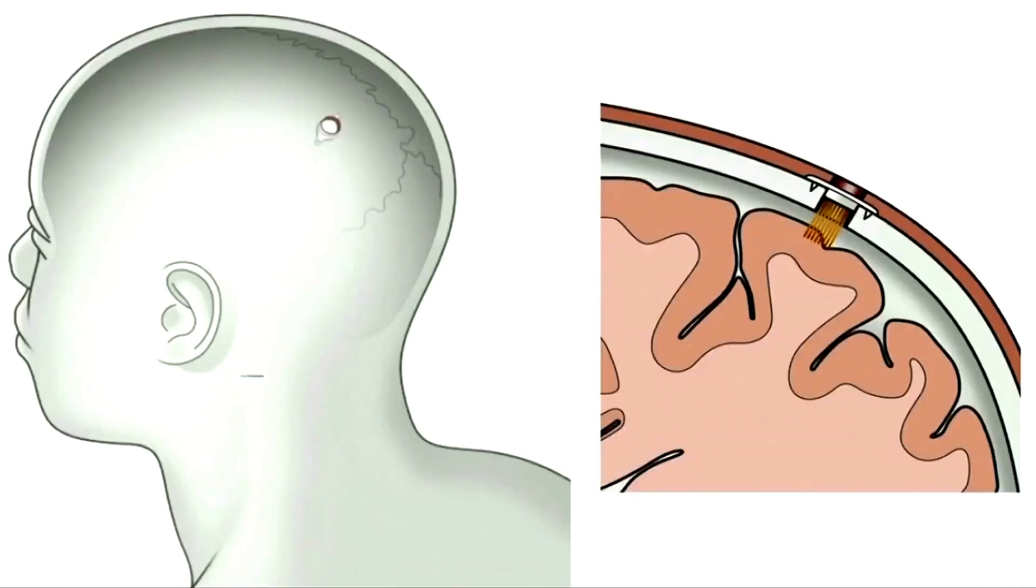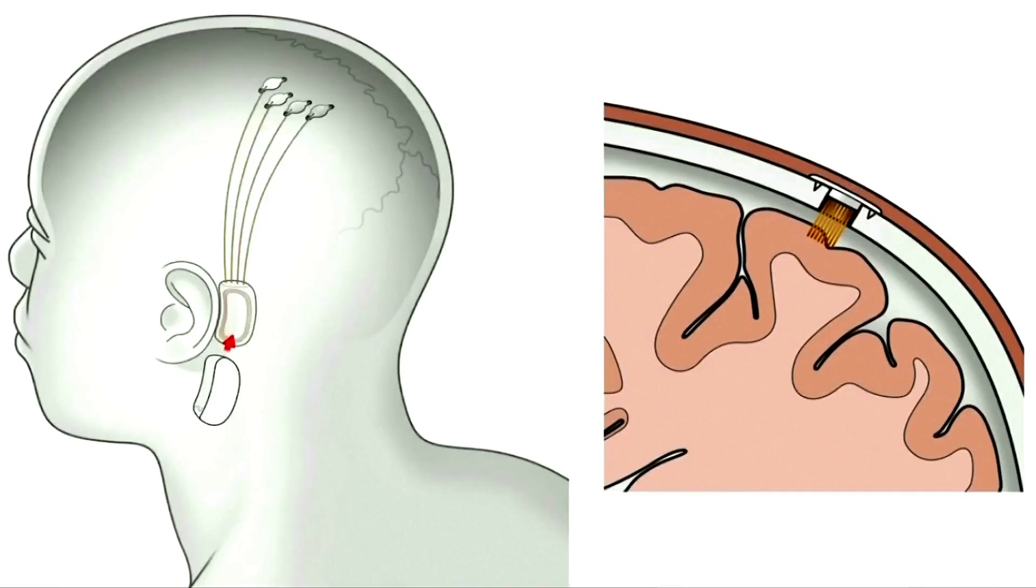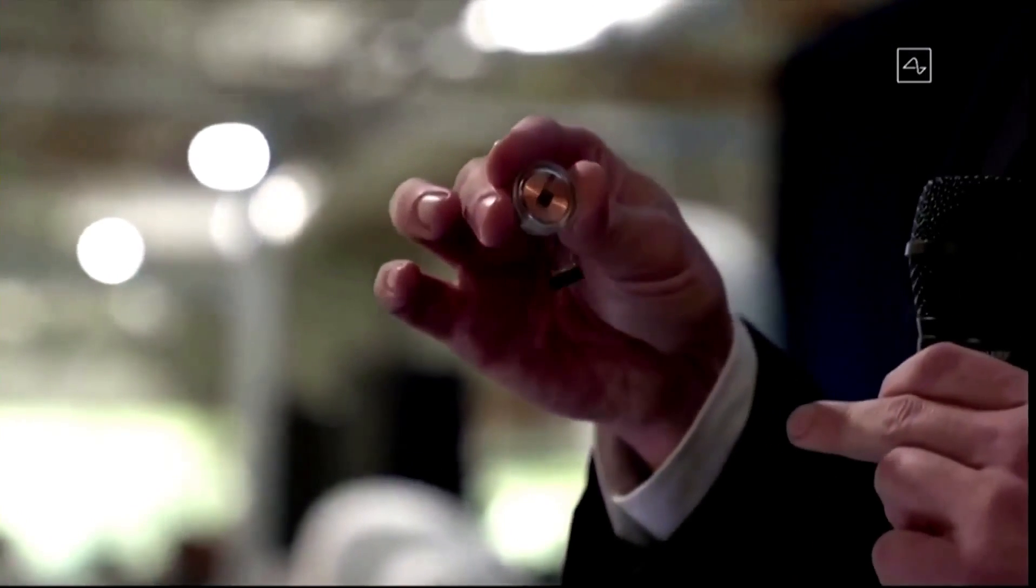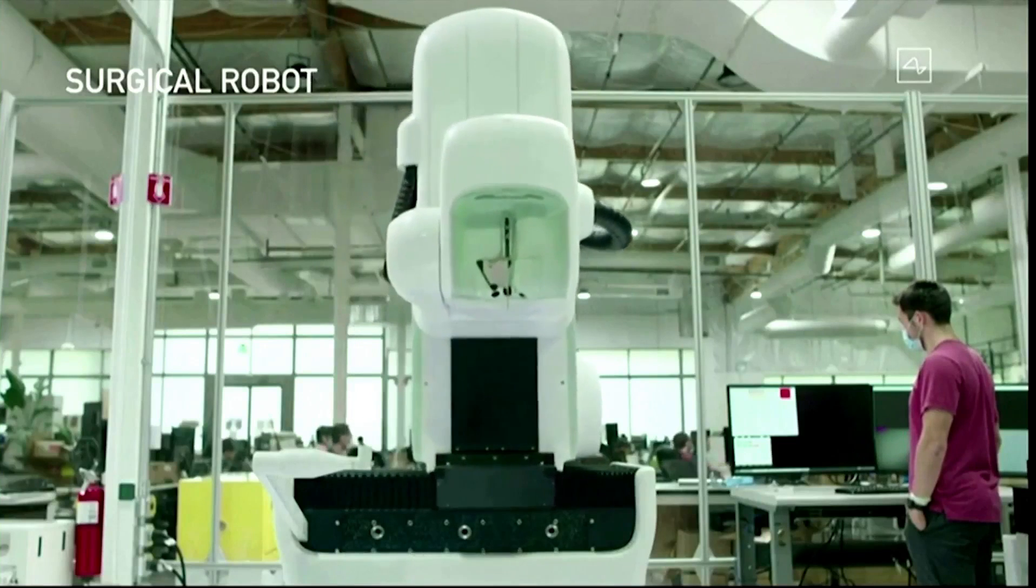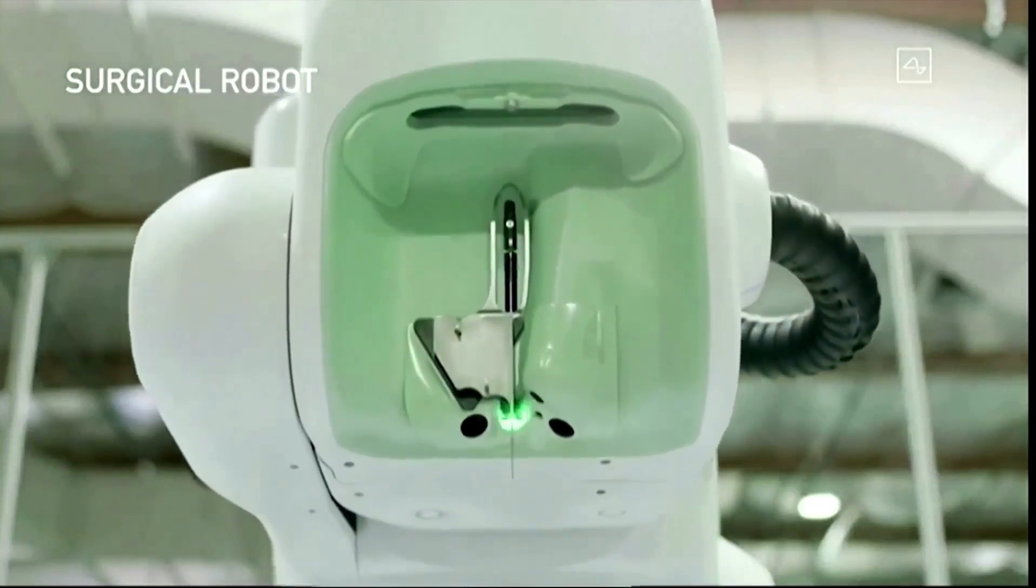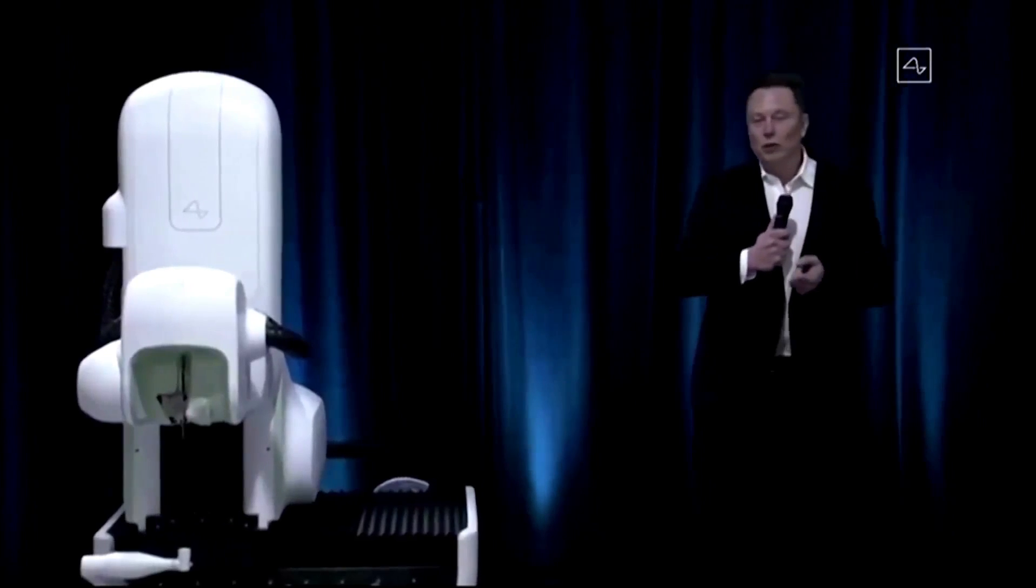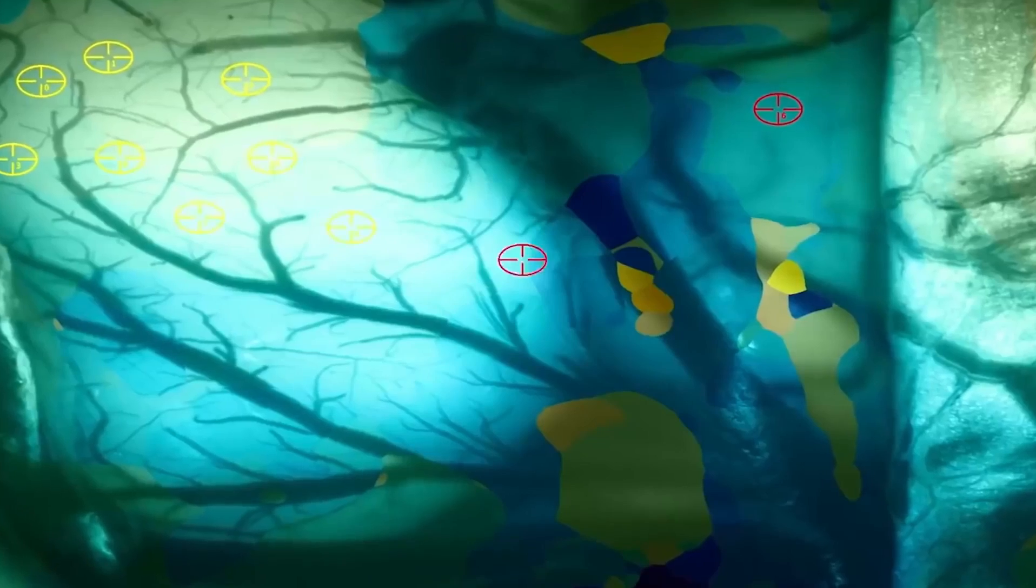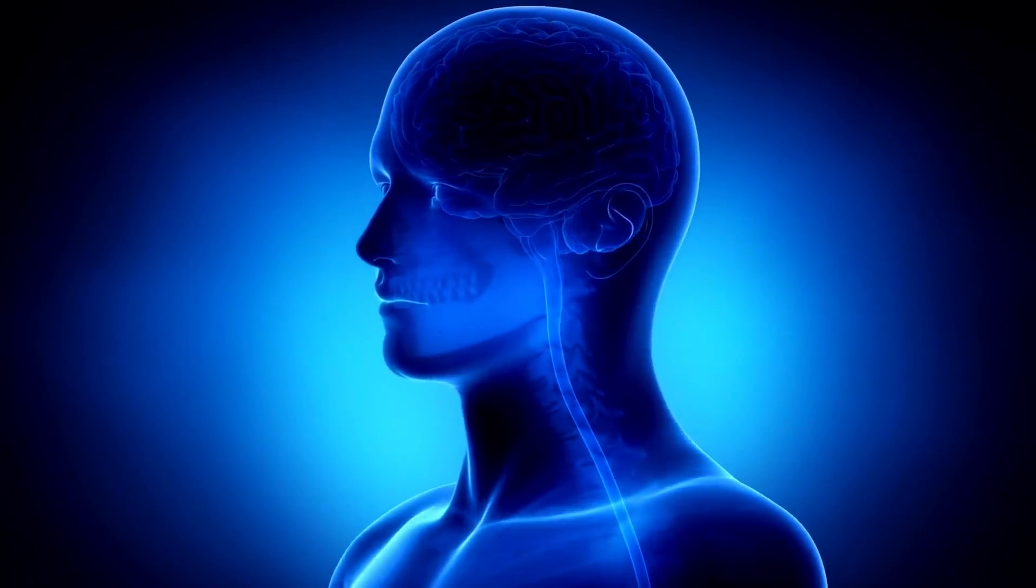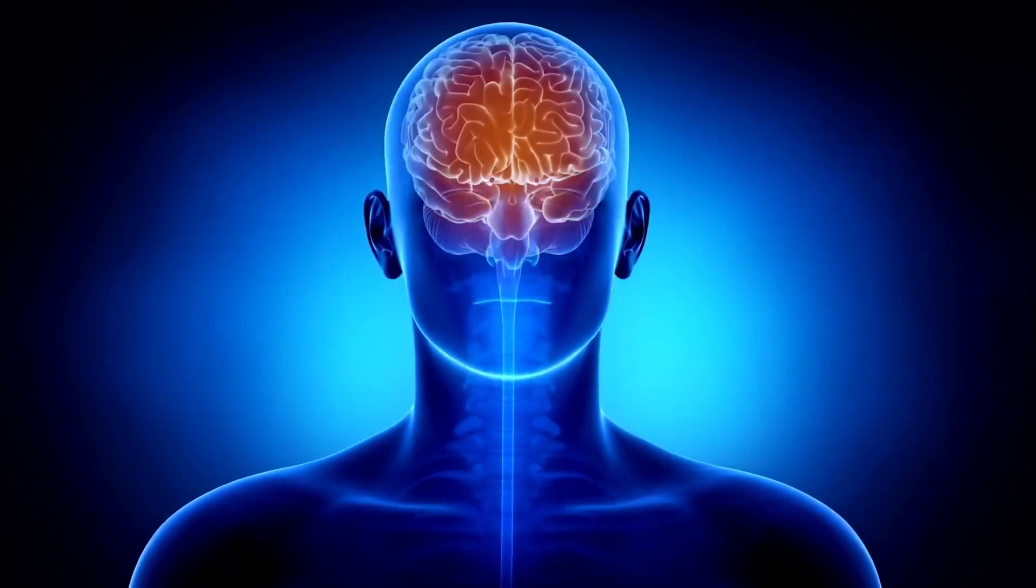Advancements and Breakthroughs: Since its inception, Neuralink has made remarkable advancements in neurotechnology. The company's first major milestone was the development of a custom-designed neurosurgical robot capable of precisely implanting thousands of tiny, flexible electrodes into the brain. This technology, known as the sewing machine robot, significantly reduces the invasiveness and trauma associated with brain surgery.